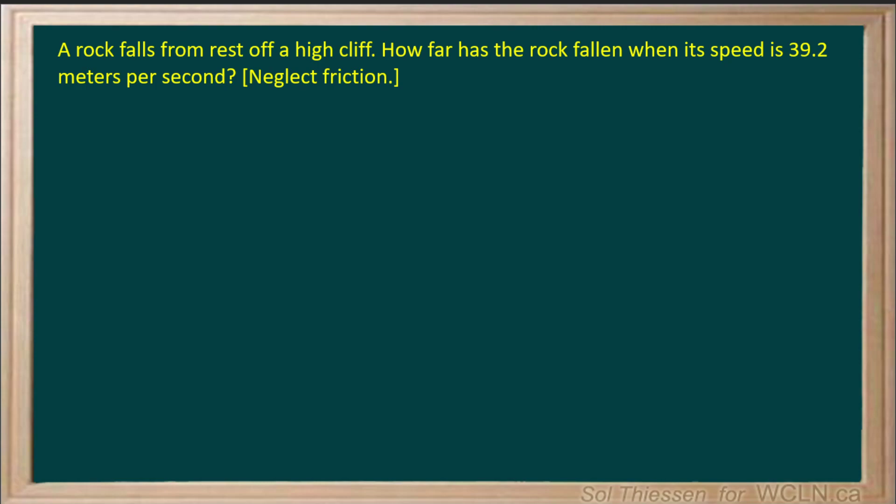A rock falls from rest off a high cliff. How far has the rock fallen when its speed is 39.2 meters per second? Neglect friction. So here we're going to assume that the rock falls straight down and that's going to allow us to use the equations that we have for this unit.